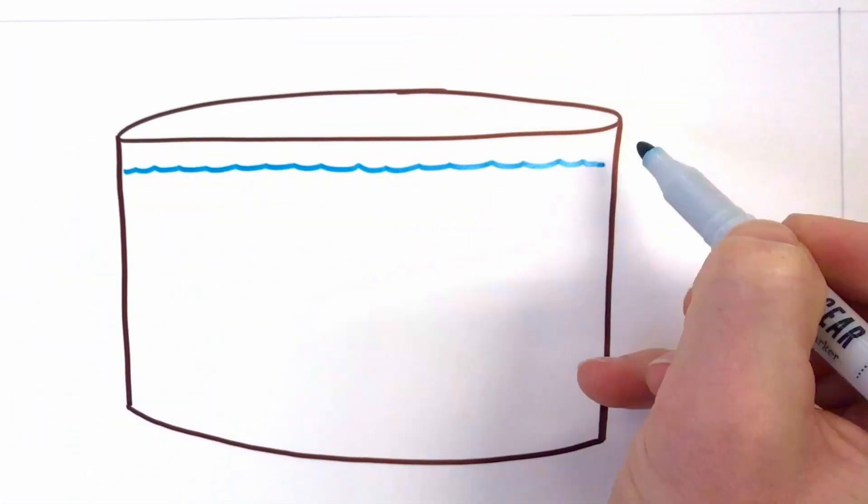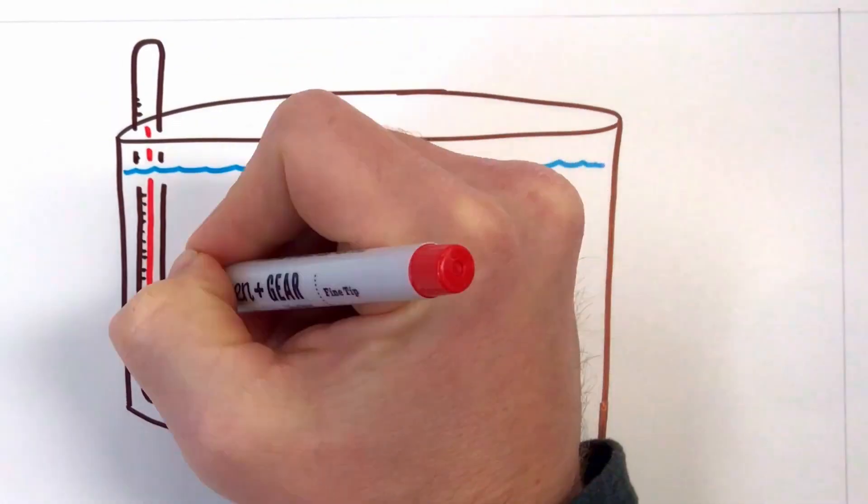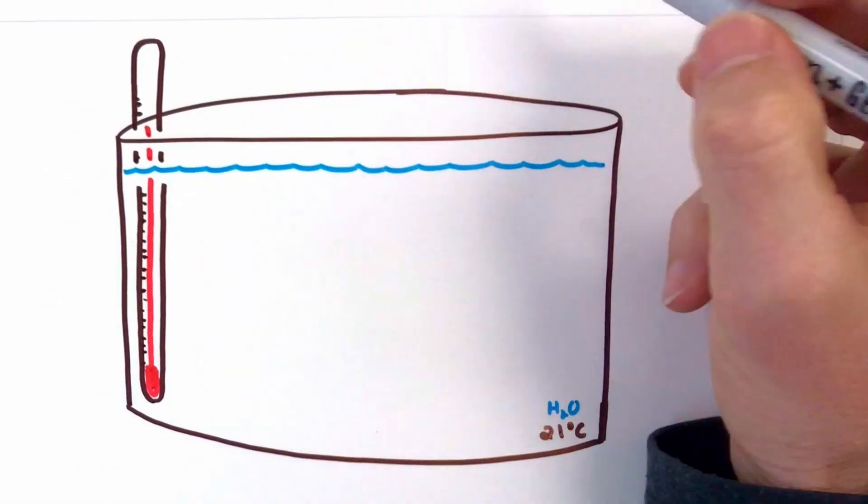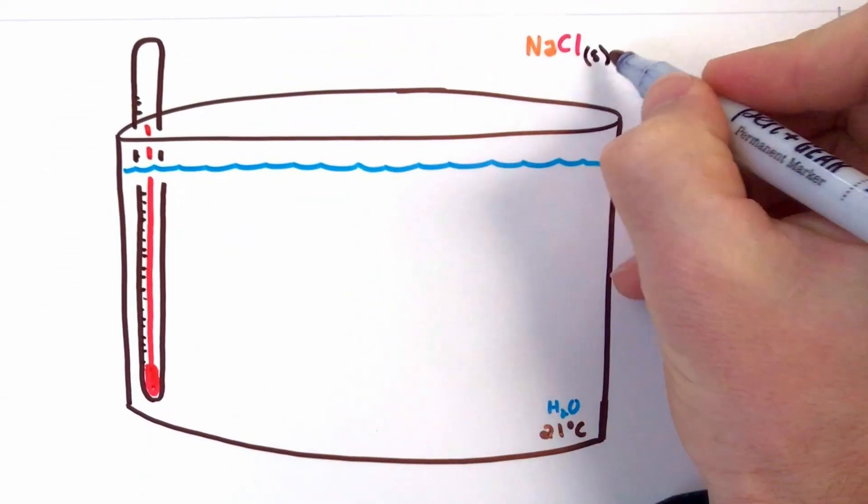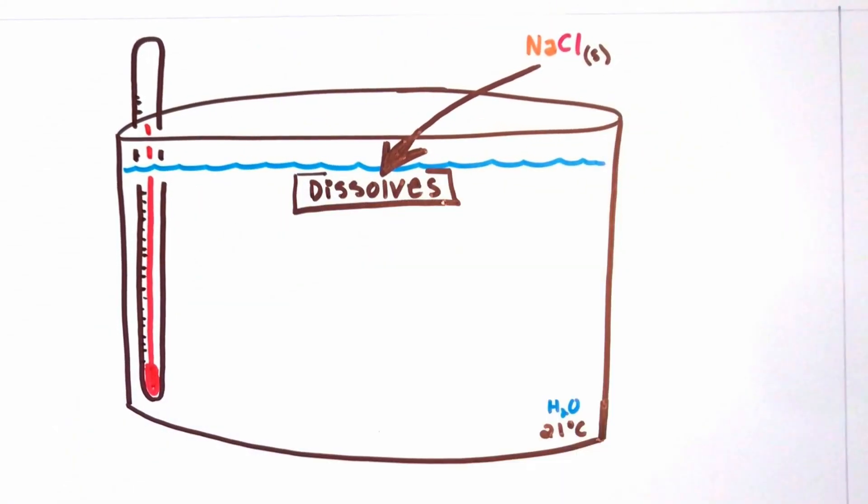Here's the beaker with the thermometer and we'll say it's starting at 21 degrees Celsius. This was a different trial I did. The salt is sodium chloride and is solid. It dissolves when it hits the water, splitting into sodium and chloride ion while the temperature drops.